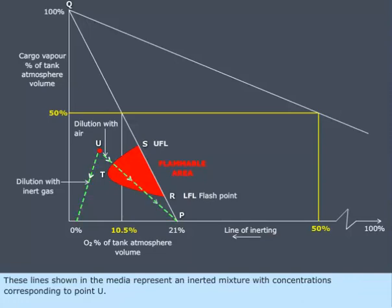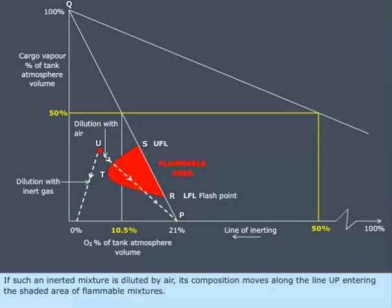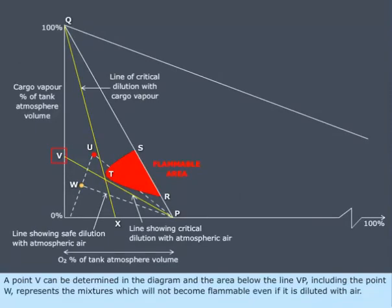These lines shown in the media represent an inerted mixture with concentrations corresponding to point U. If such an inerted mixture is diluted by air, its composition moves along the line UP, entering the shaded area of flammable mixtures. A point V can be determined in the diagram, and the area below the line VP, including point W, represents the mixtures which will not become flammable even if diluted with air.